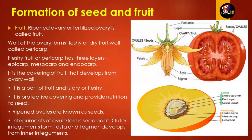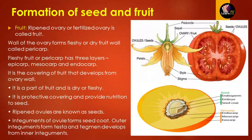The pericarp is the covering of the fruit that develops from the ovary wall. Different parts of the fruit develop from the different coverings of the ovary wall. It is a part of the fruit and can be dry or fleshy. The covering helps in providing protective covering and providing nutrition to the seeds.